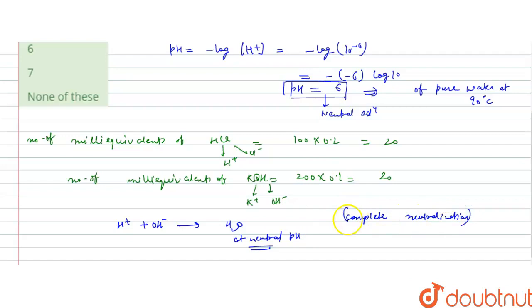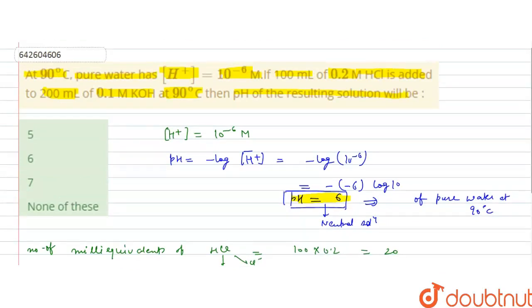So solution will be neutral and the neutral solution has pH that is 6, we have calculated at 90 degrees Celsius. It means pH of the resulting solution will be at neutral pH, so answer to this question will be option B, that is 6. I hope you understood the solution, thank you.